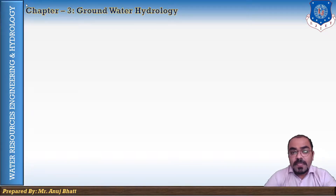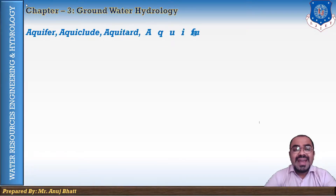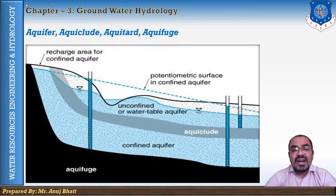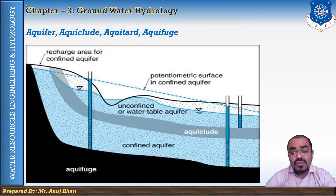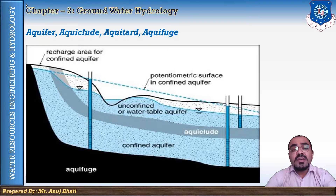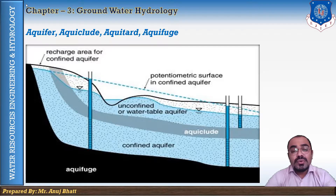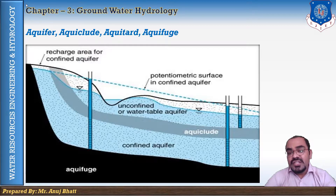The first term is aquifer. An aquifer may be defined as a geological formation that contains sufficient permeable material which permits storage as well as the movement of water through itself under ordinary field conditions, such as sands and gravel, which permit water to pass through.